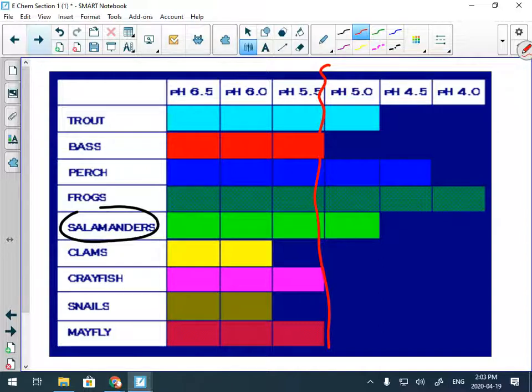So the perch do okay. The bass die. Trouts croak pretty quick. The clams are already dead. The crayfish, snails, and mayfly, they all start to disappear.